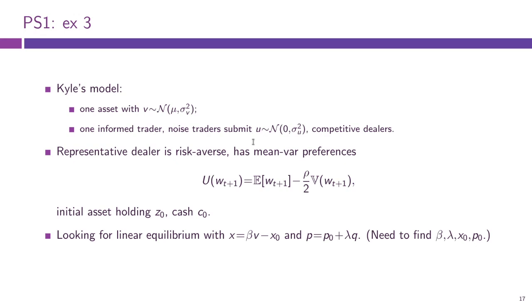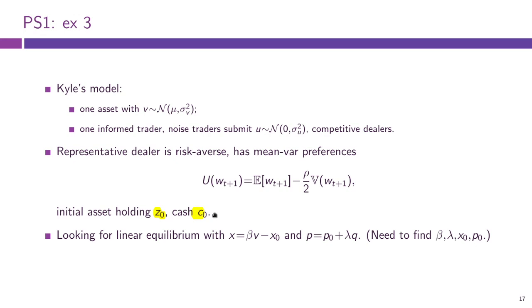In this problem, our representative dealer was assumed to be risk-averse, as a deviation from the standard Kyle's model. We assume that the dealer has mean-variance preferences, meaning the utility function he maximizes is given by the expectation of future wealth minus the variance of future wealth times the risk-aversion coefficient. We assume the dealer has some initial asset holding Z0 and also some initial cash holding C0, but the cash holding does not matter for literally anything.